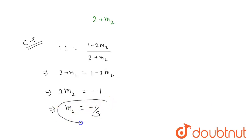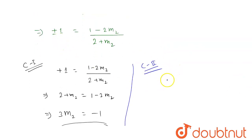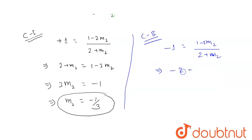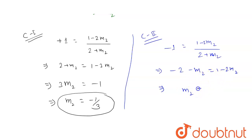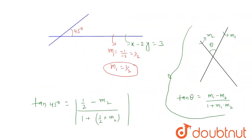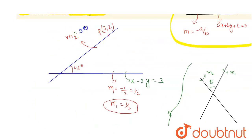For case two with the negative sign: minus 1 equals (1 minus 2m2) upon (2 plus m2). This gives minus 2 minus m2 equals 1 minus 2m2, so m2 equals 3. Therefore we get two values of m2: minus one-third and 3.